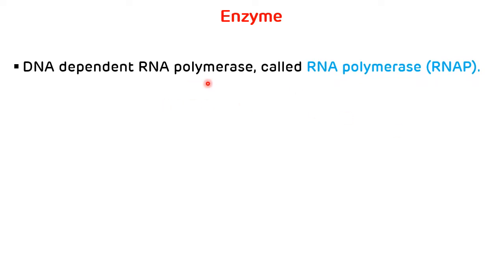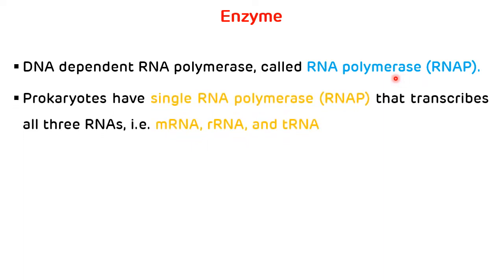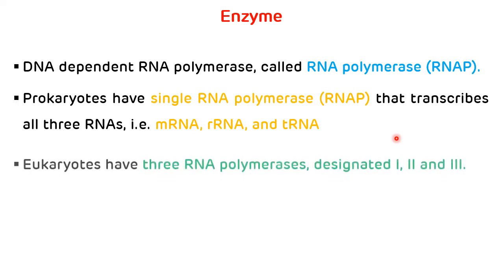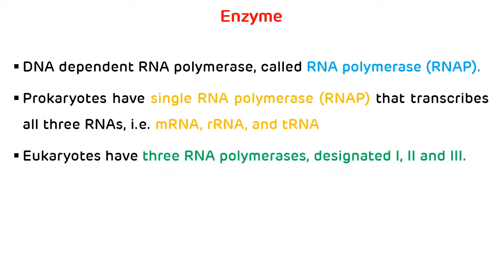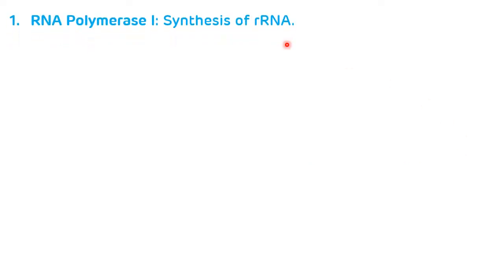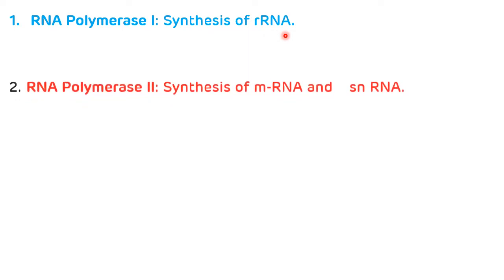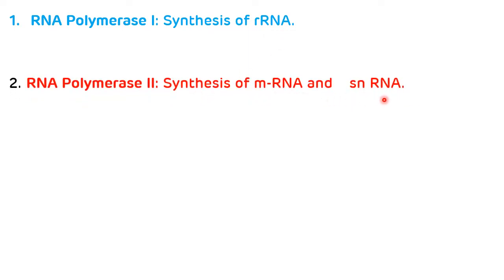The enzyme important for RNA synthesis is DNA-dependent RNA polymerase, called RNA polymerase. In prokaryotes, there is a single RNA polymerase enzyme that synthesizes all three RNAs: messenger RNA, ribosomal RNA, and transfer RNA. Eukaryotes contain three different RNA polymerase enzymes: RNA polymerase 1, 2, and 3. RNA polymerase 1 synthesizes ribosomal RNA, RNA polymerase 2 synthesizes messenger RNA and small nuclear RNA, and RNA polymerase 3 synthesizes transfer RNA.